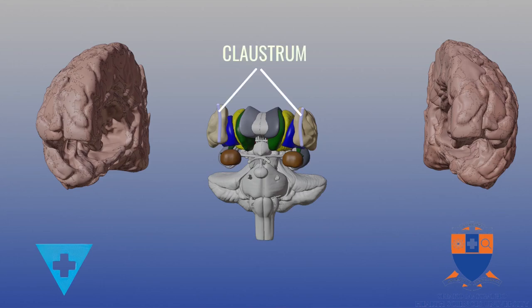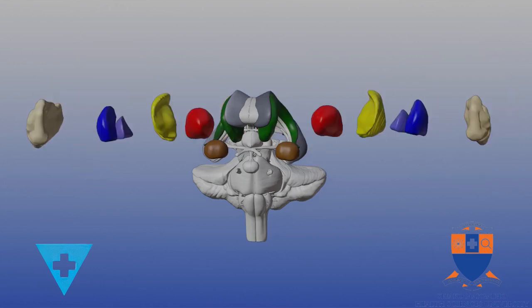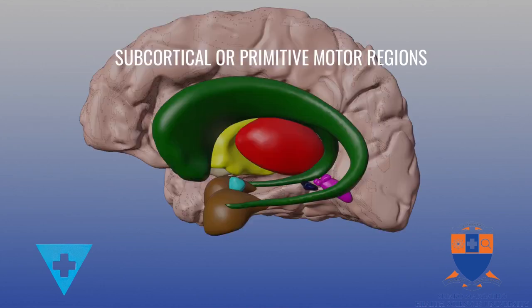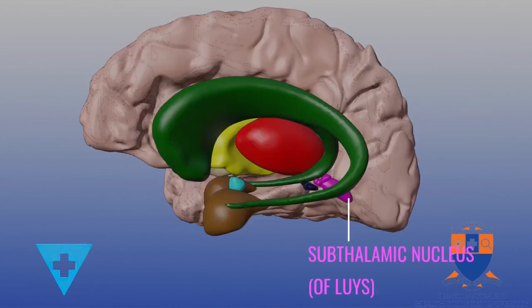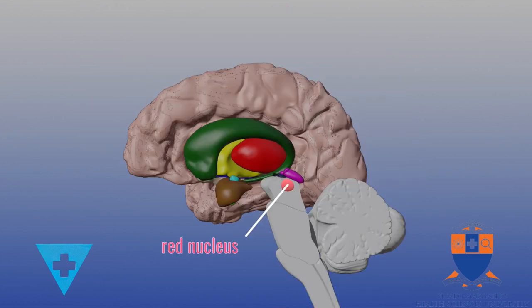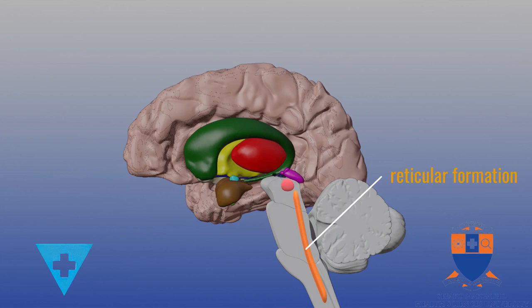Lastly we will be discussing the claustrum. The lentiform nucleus is medial to this narrow grey matter plate between the extreme and the external capsules. The subcortical or primitive motor regions are the subthalamic nucleus of Luys in the diencephalon, the red nucleus and substantia nigra in the midbrain and the reticular formation.